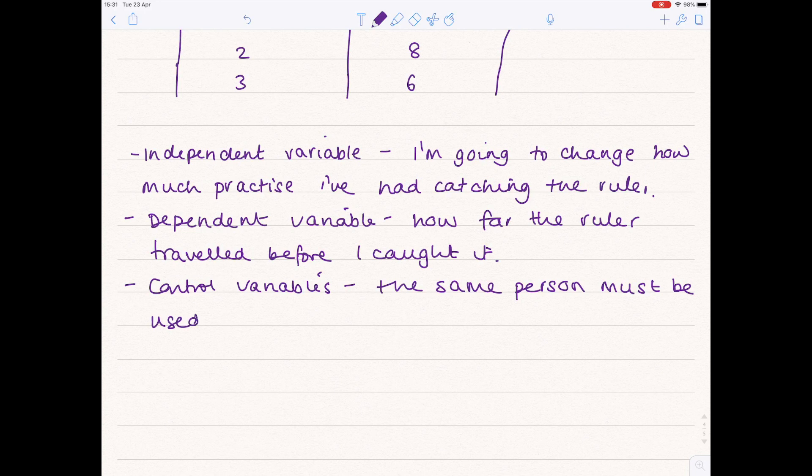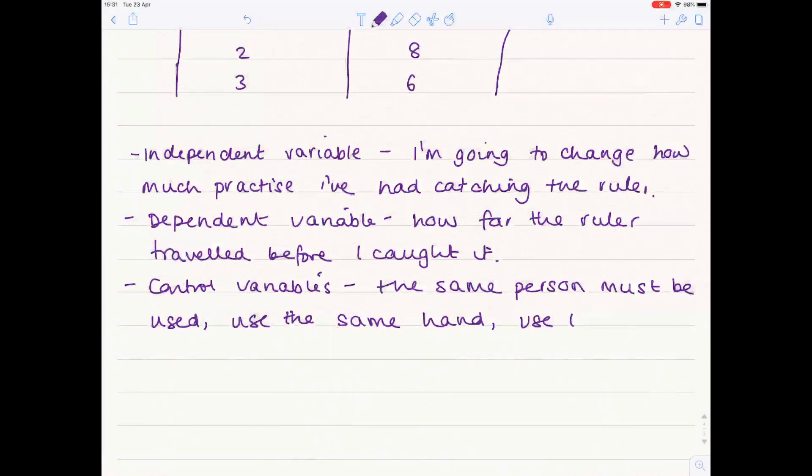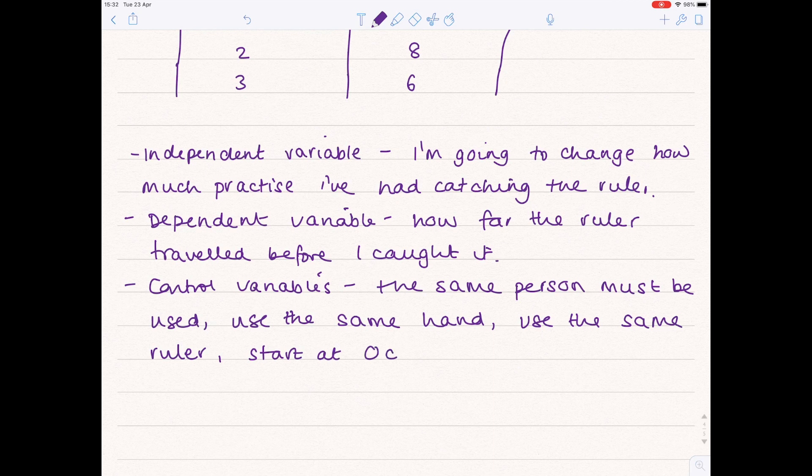You need them to use the same hand. You can't keep switching between left and right hand that would be really unfair. Use the same ruler because some people might struggle more to catch a plastic ruler compared with a wooden ruler and start at zero centimeters each time. So that means where you've got your fingers lined up. But yeah quite a waffly strange experiment.